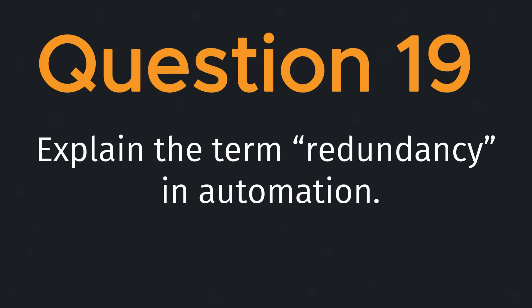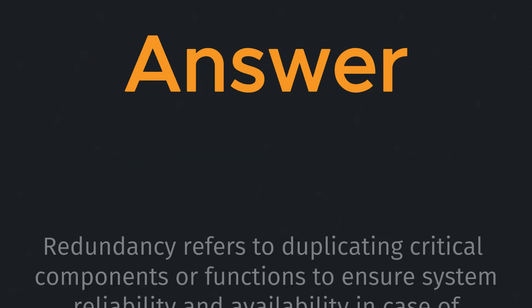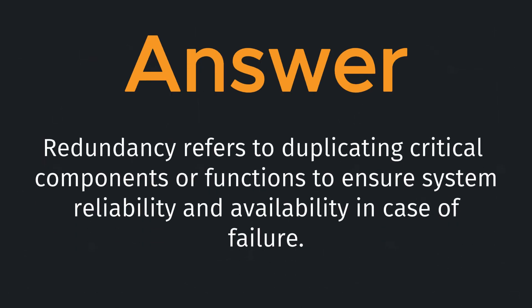Question nineteen: explain the term redundancy in automation. Redundancy refers to duplicating critical components or functions to ensure system reliability and availability in case of failure.